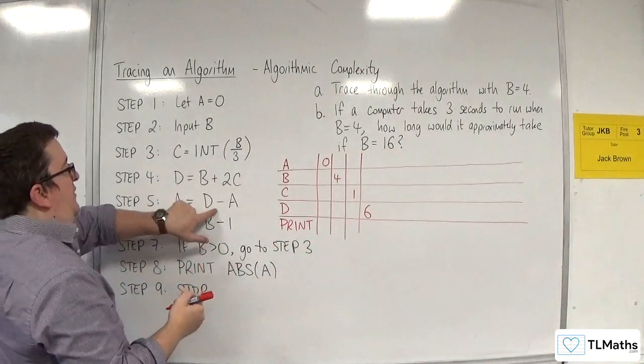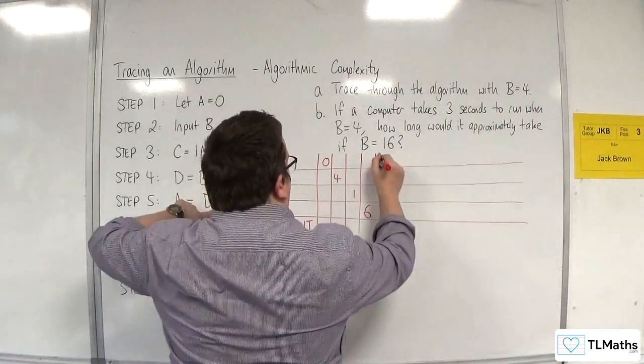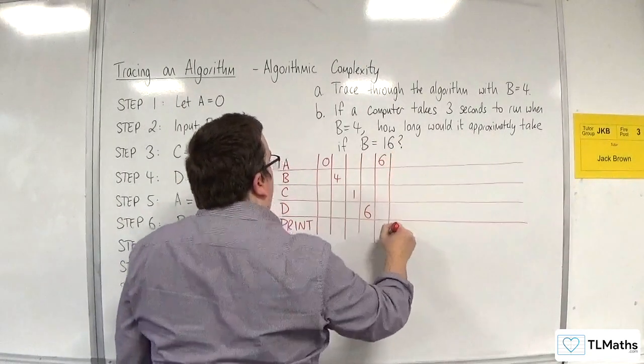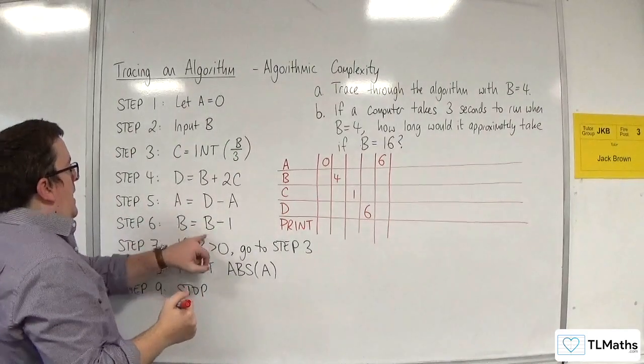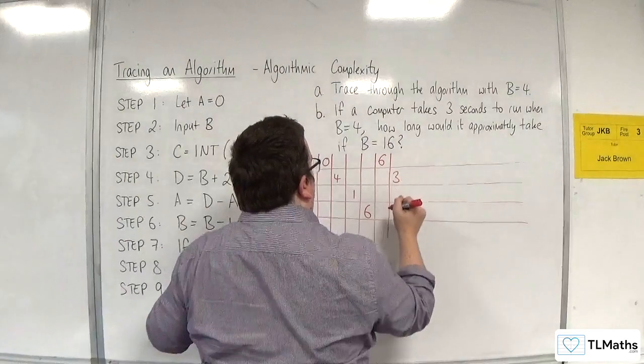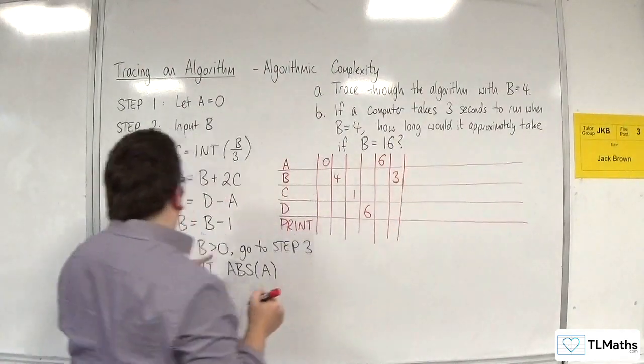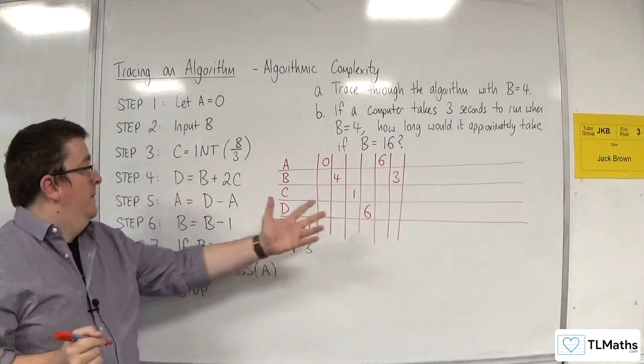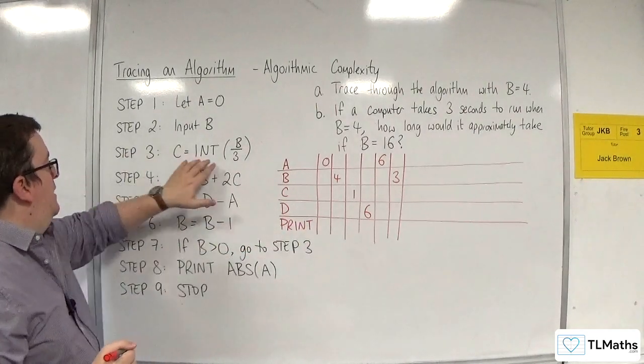A is now d take away a. So, d take away a, that'd be 6. B is b take away 1, so we go down to 3. If b is greater than 0, go to step 3. Well, b is 3, which is clearly greater than 0, so I need to go to step 3 now.